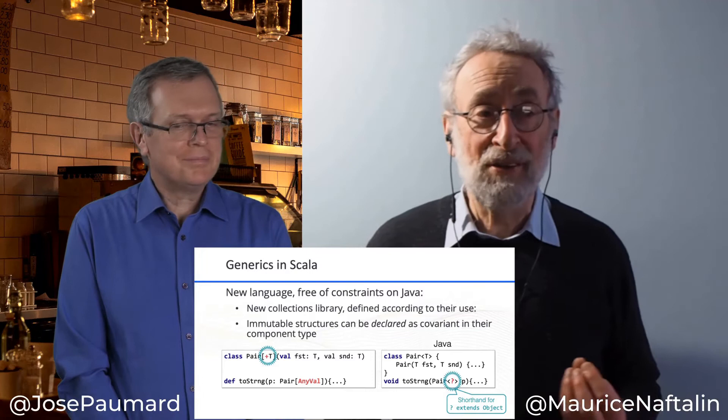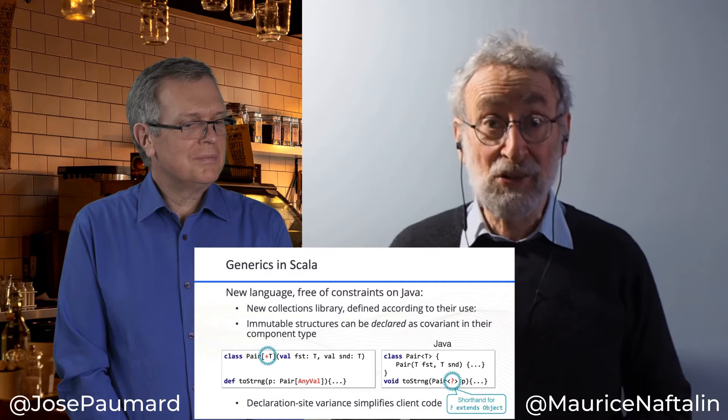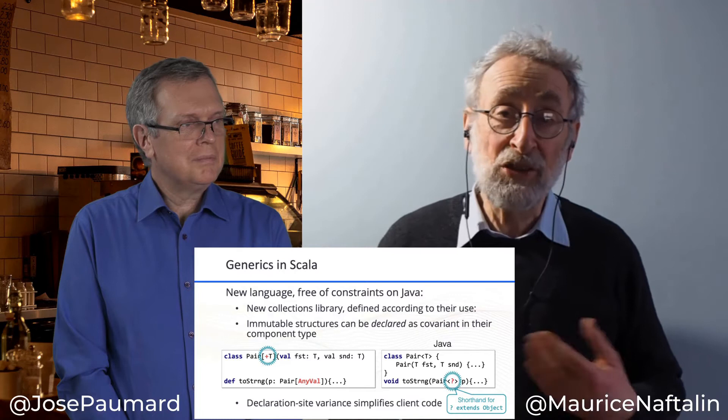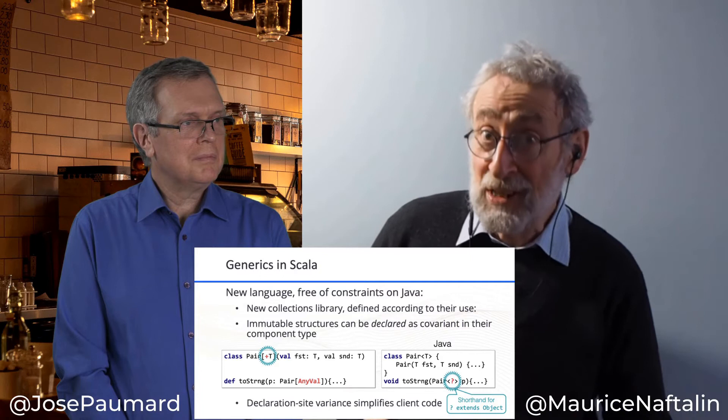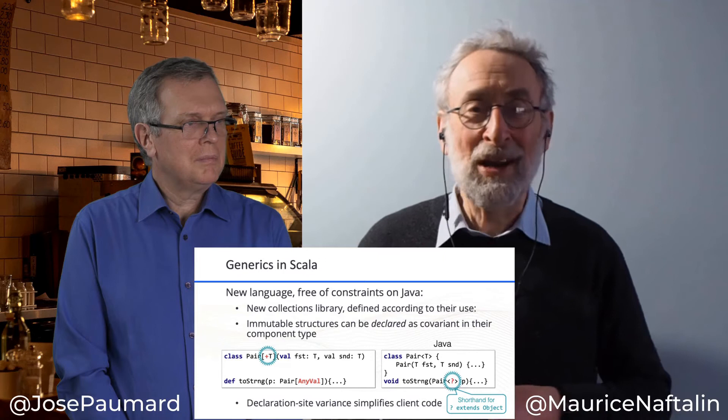Declaration site variance simplifies client code, and in fact there is a proposal in the pipeline for declaration site variance to be introduced into Java as well. This ties up the generics part and shows that the advantage of starting from scratch with a language that could be defined and redefined over time, with the experience of Generic Java, gave Scala a more elegant and more complete representation of generics.